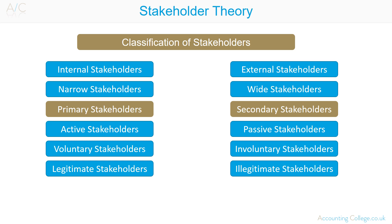Secondary stakeholders are those groups who feel involved in the business success or failure, whether or not management agree. They have limited direct influence on the business and without whom the business would survive, for example the community, pressure groups, etc.